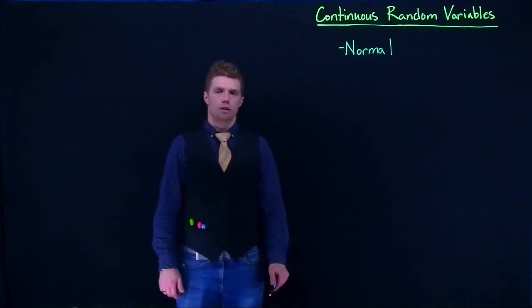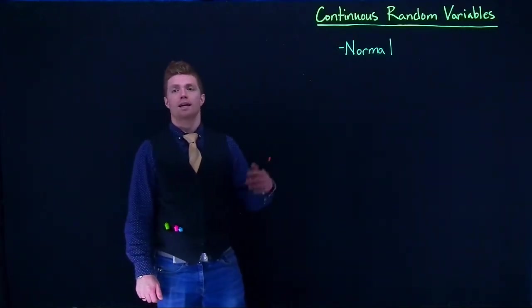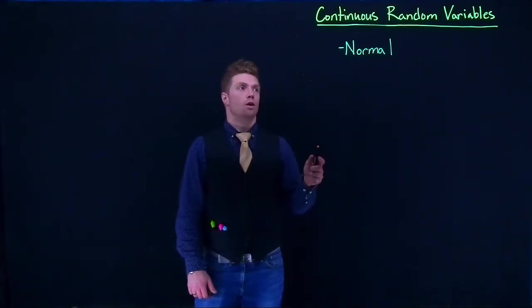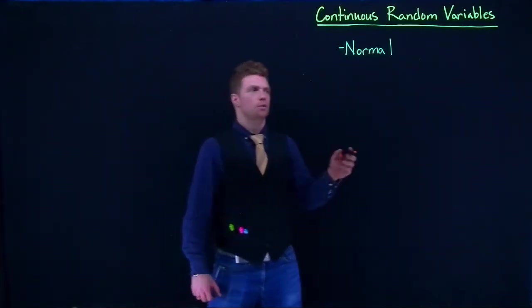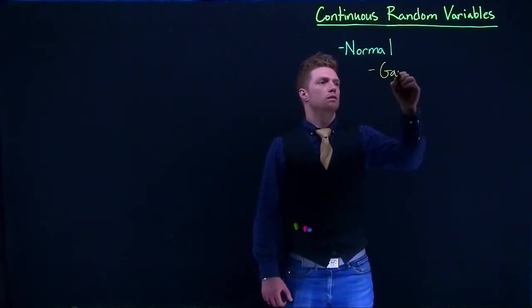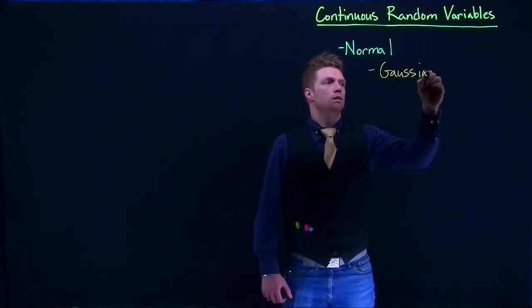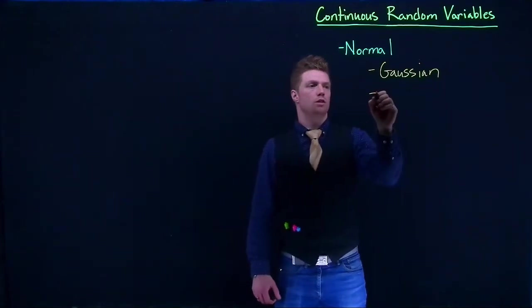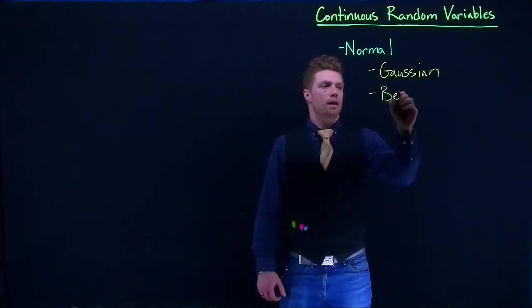Continuing in our discussion of continuous random variables, we're going to talk about yet another distribution called the normal. Sometimes you'll also hear the normal referred to as the Gaussian distribution. You also hear it called a bell curve.